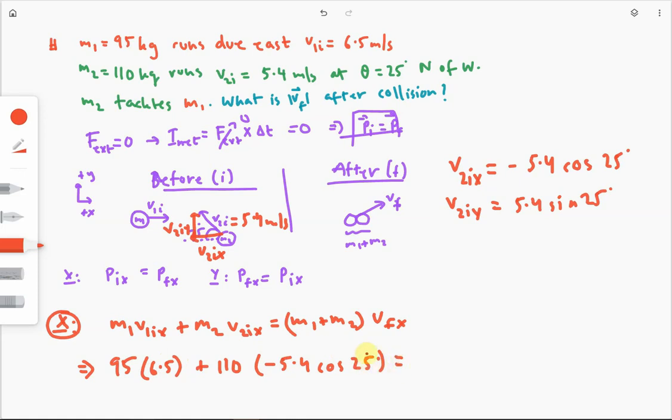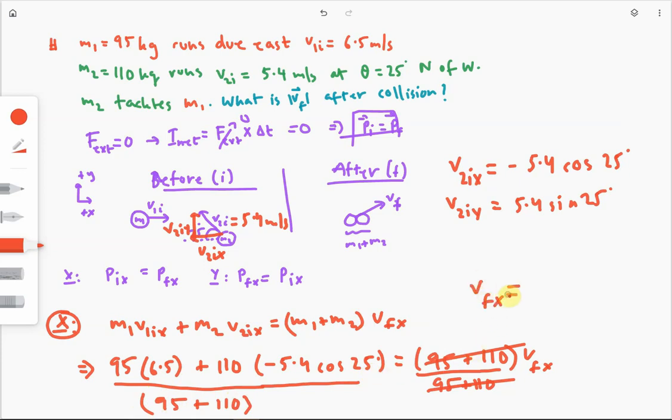And that is equal to the summation of the masses, so 95 plus 110 times the x component of the final velocity. So, we have only one unknown, so we can go ahead and solve this equation pretty easily. Divide both sides by 95 plus 110 kilograms. If you do this calculation, we end up with the x component of the final velocity to be 0.386 meters per second.